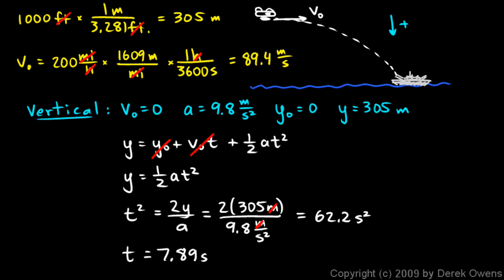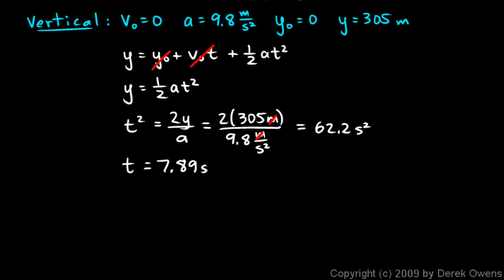So he has to release the bomb 7.89 seconds before he's over the boat. That bomb is going to be falling for 7.89 seconds. So horizontally, it's going to be traveling at this speed for that long. So we can figure out how far it will go horizontally as it falls. And that's the distance that he needs to be away from the boat before reaching the boat, before dropping the bomb on the boat. So now let's switch over from vertical and do horizontal here.